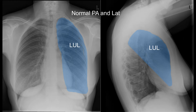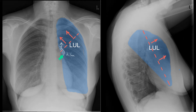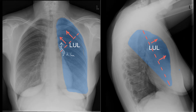When the left upper lobe collapses, either due to an extrinsic mass lesion compressing the left upper lobe bronchus or an endobronchial lesion such as a neoplasm, the left upper lobe collapses towards the mediastinum and towards the anterior chest wall. The hilum is also displaced and goes upwards due to the volume loss. As a result, the left lower lobe hyperexpands to occupy the vacated space as the left upper lobe collapses towards the anterior chest wall and towards the mediastinum.